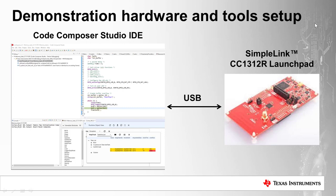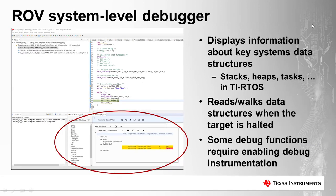Code Composer Studio can run on Macs, PCs, and Linux machines. It's an Eclipse-based IDE, so if you're familiar with Eclipse, you should have no problem using it. CCS connects via a USB cable to the CC1312 launch pad for downloading programs and doing debug control. The CCS IDE contains a number of additional tools beyond simple compile, link, and debug — one of these is the ROV System Level Debugger.